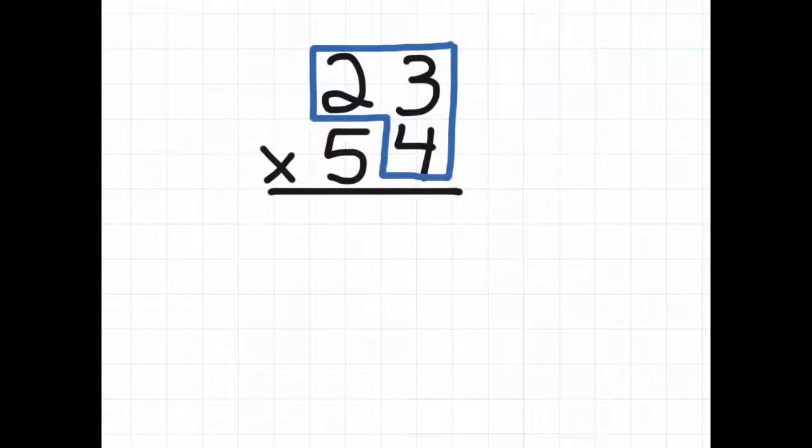So we have 4 times 3. Well, 4 times 3 is 12. We need to make sure we put the 1 for 12 in the correct place which goes right up here. We want to put a 1 in the 10's column because that's where it belongs.